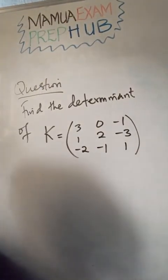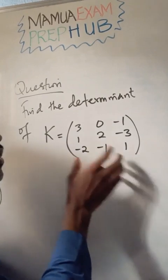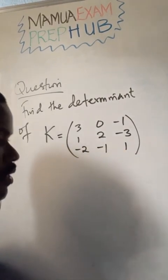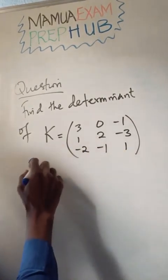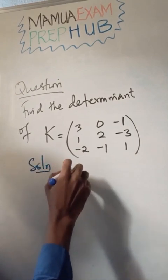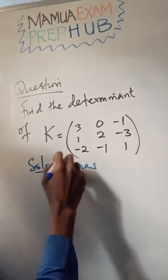Alright, the problem like I have on the board is: find the determinant of K given this 3 by 3 matrix. We are going to use Thomas Cramer's method.